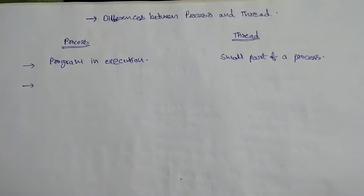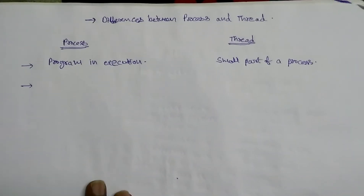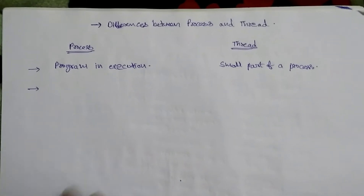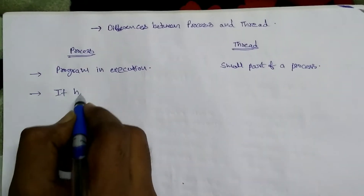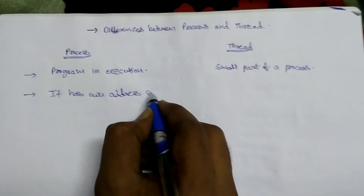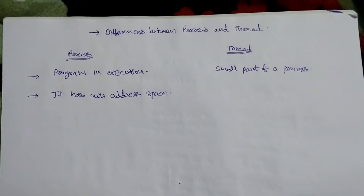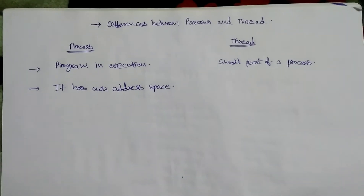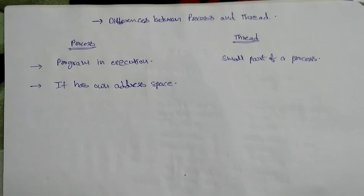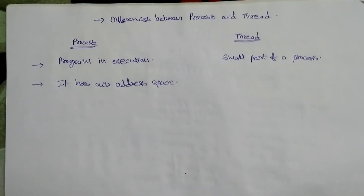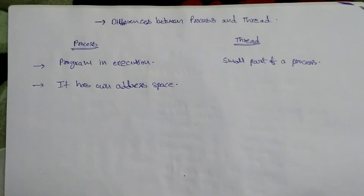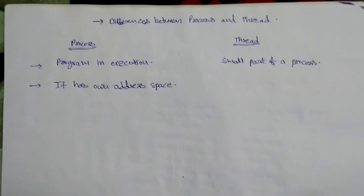The next difference is that a process has its own address space — it has its own data segment. Address space is the range of addresses the process will occupy. Every process has its own address space, its own range of addresses. But for threads, if there are two threads of a process, the two threads will share the same address space of that process.